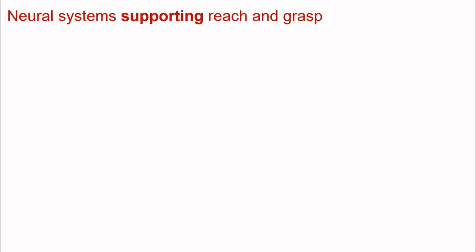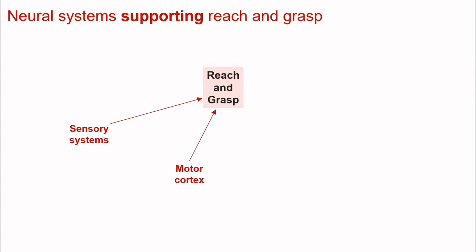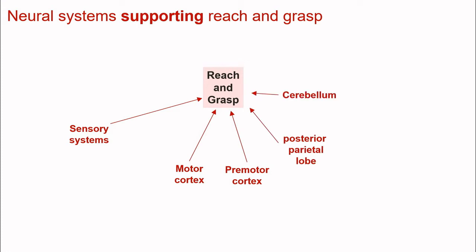In the next part of this lecture, we'll be looking at the neural systems that support reaching and grasping. The ability to perform an effective reach and grasp is supported by sensory systems, by the motor cortex, by the premotor cortex, by the posterior parietal lobe, and the cerebellum. We'll be looking at each of these in more detail over the next few slides.